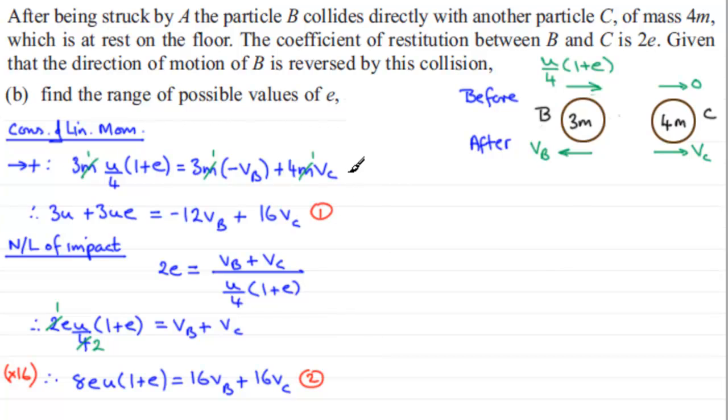Now we're going to work with these two equations, solve them simultaneously. We're going to eliminate the term in VC by subtracting our equations, equation 2 minus equation 1. Expanding the bracket, we're going to have 8EU plus 8E squared U minus 3U minus 3UE, which equals 16VB minus minus 12VB, so that's 28VB.